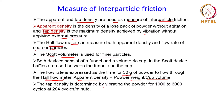The tap density is determined by vibrating the powder for about 1000 to 3000 cycles at 284 cycles per minute. Once vibrated, the powder settles down, so the volume reduces compared to the loose volume used for apparent density. Once the volume after vibration is calculated, the weight is divided by that volume to obtain the tap density.